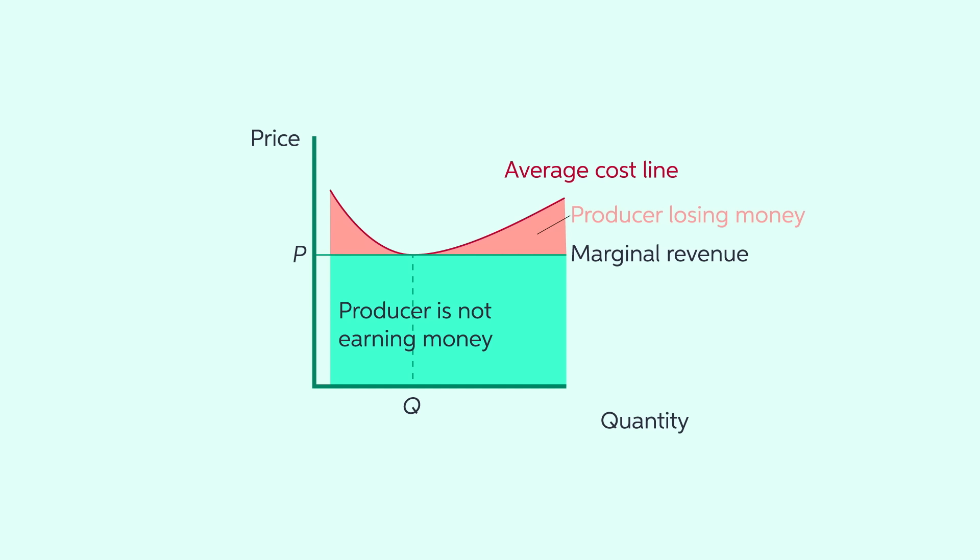This is represented by the pink area under the average total cost line, but above the price line. However, if the average total cost equals the price, then the price paid by consumers is just enough to cover the price of inputs needed to make the product.